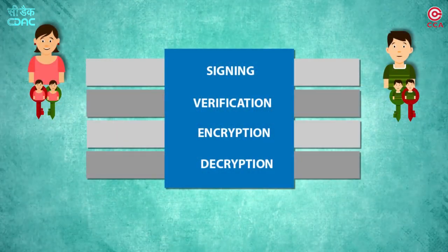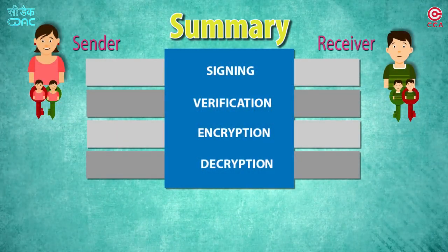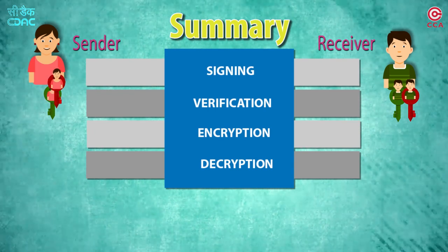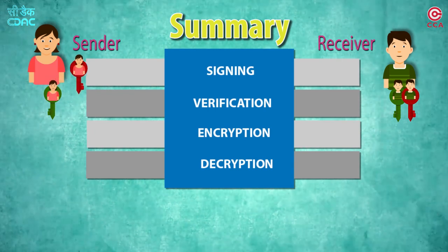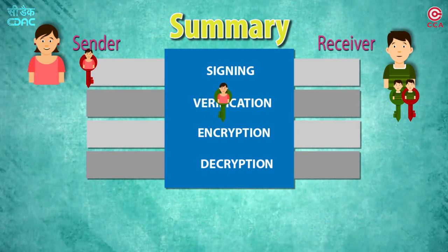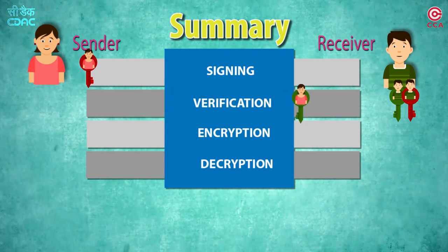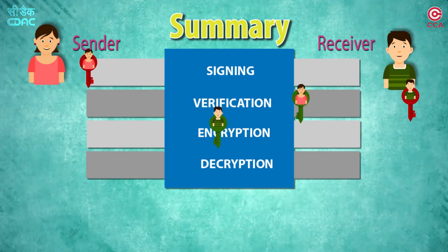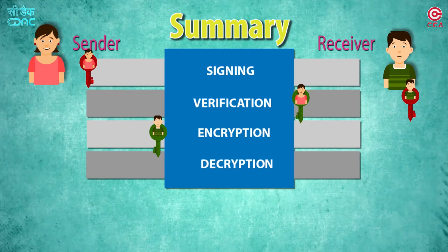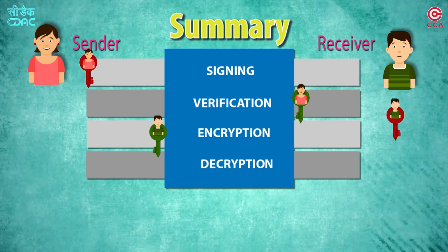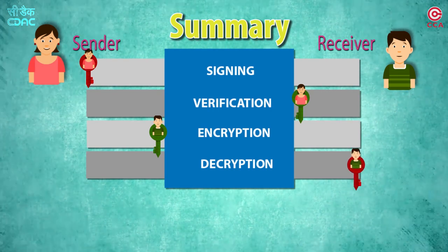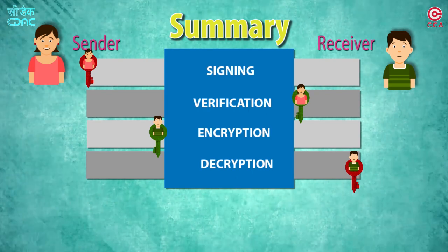To summarize: for digital signing, one uses his or her own private key, and for verification, the verifier uses the signer's public key. For encryption, one uses the receiver's public key, and the receiver will then use his or her private key for decryption.